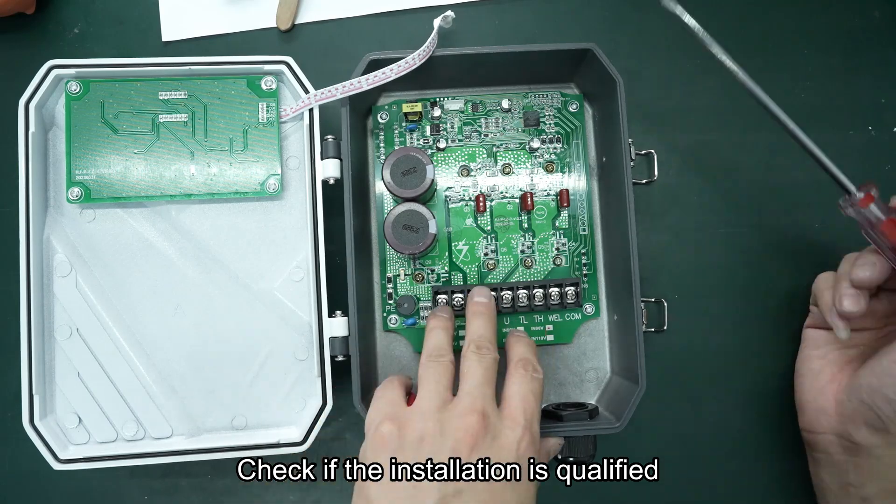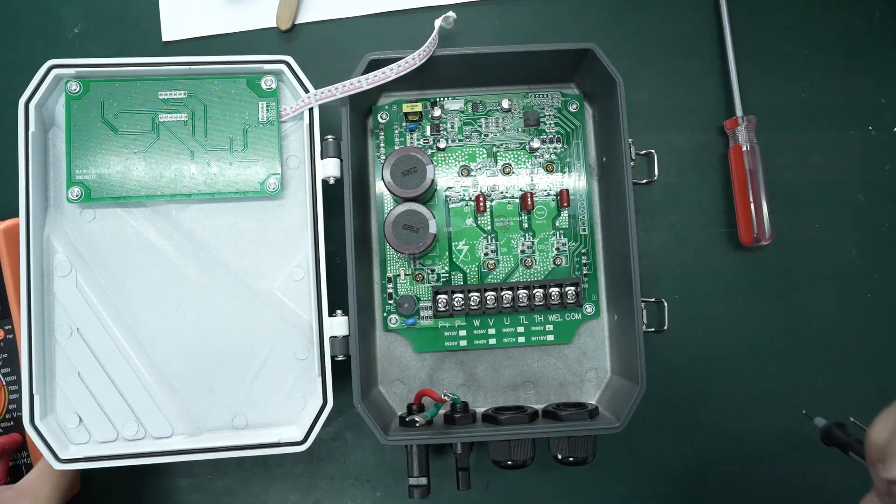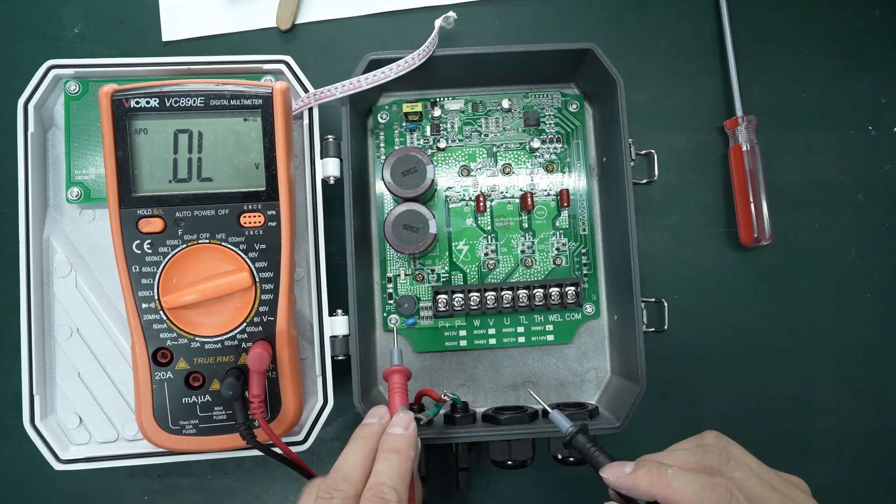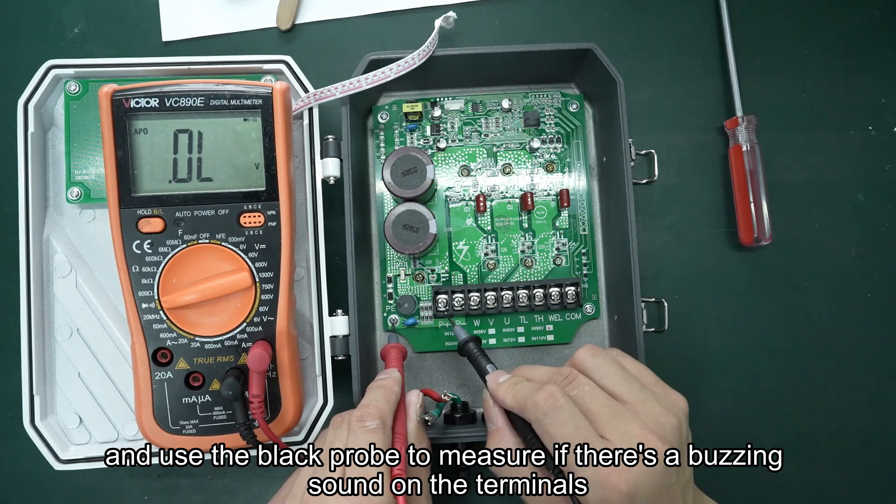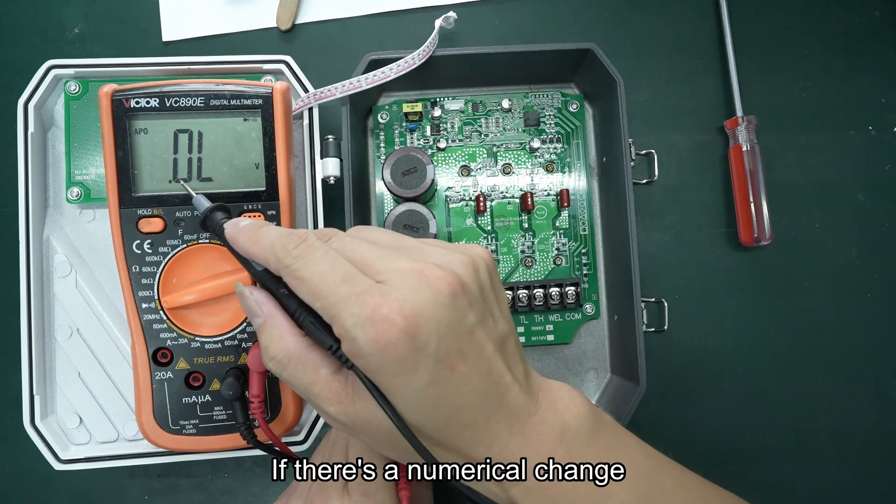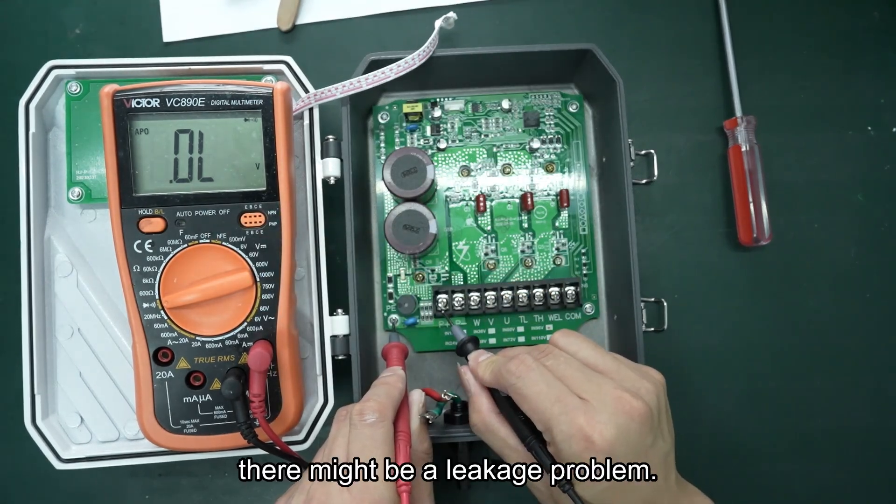Check if the installation is qualified. Use the buzzing mode on the multimeter. Place the red probe on the PE position and use the black probe to measure if there's a buzzing sound on the terminals. If there's a numerical change, there might be a leakage problem.